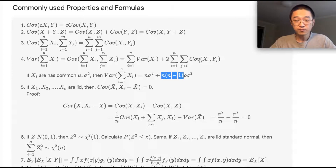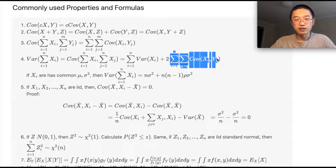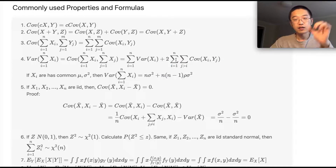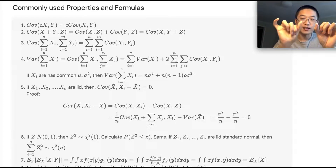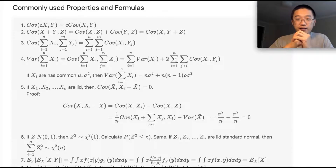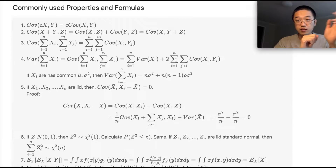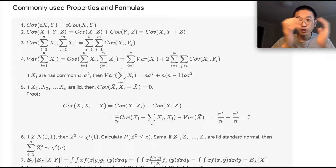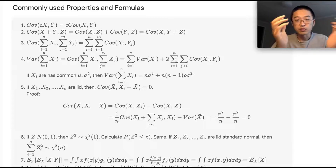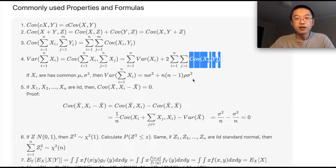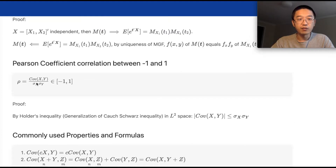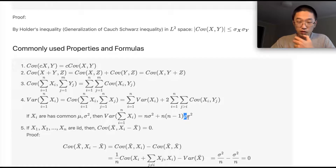That n(n−1) comes from taking the covariance sum: we take one (X_i − μ) and one (X_j − μ). With n random variables there are n(n−1) ways to pick two distinct ones. Since the covariance is the same for all pairs, by the Pearson correlation formula it equals ρ times the variance.